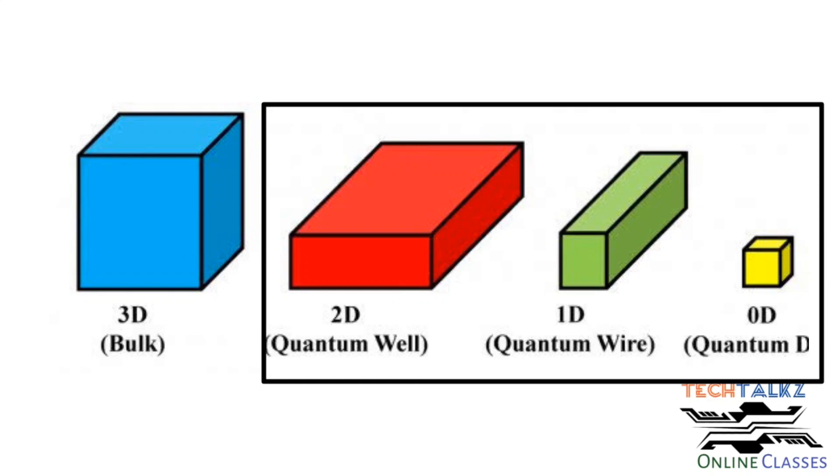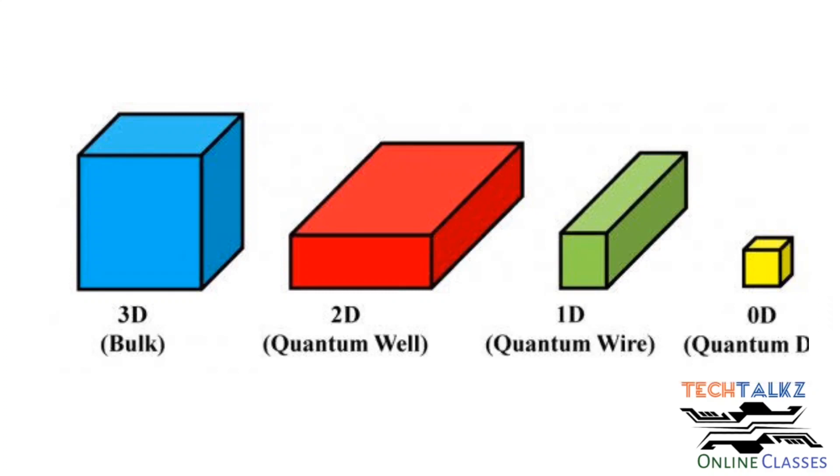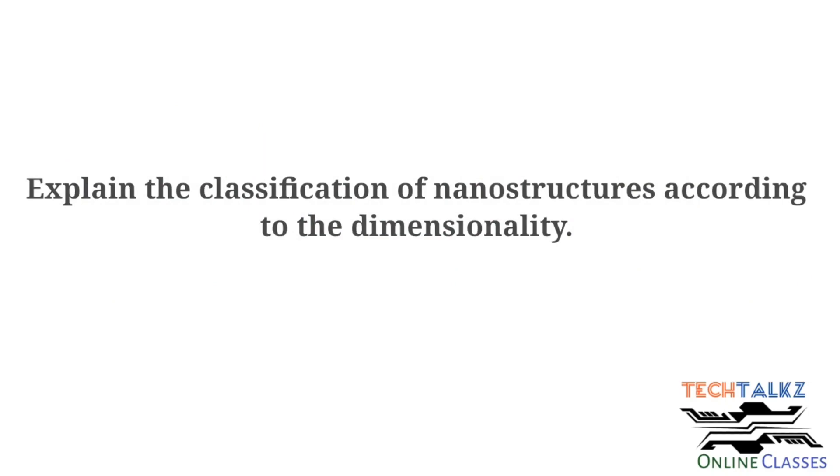These quantum wells and quantum dots are used for manufacturing quantum lasers and quantum LEDs. We will discuss more about quantum wells in the last three modules. The expected university question from this session is, write short note about the classification of nanostructures according to their dimensionality.